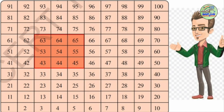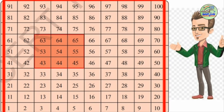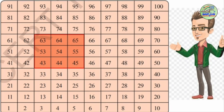Children, once look at this 100 number table. This is the 100 number table — once study this table carefully. You can observe numbers 1 to 100 arranged in order.